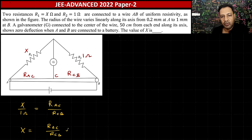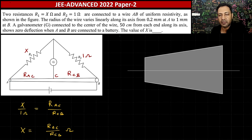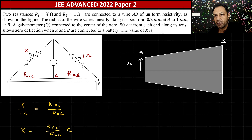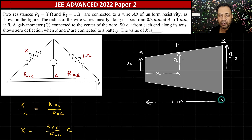My main task is to find the ratio R_AC to R_CB. For that, I'll draw a magnified diagram of wire AB — this end is A and this end is B. The radius varies linearly: radius at A is r1 = 0.2 mm and at B is r2 = 1 mm. At a general position P at distance x from A, the radius is r.